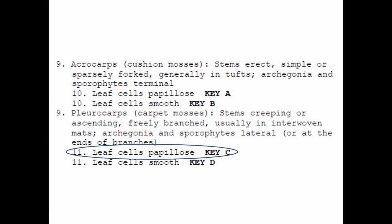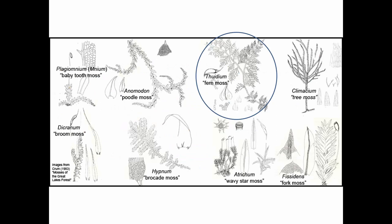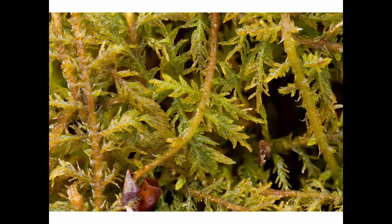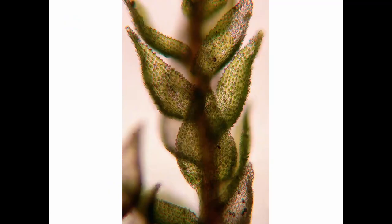Now let's look at some pleurocarps with papillose leaves. One is called Thuidium. Thuidium is a very fern-like moss, branched and branched again — twice pinnate — and very common. It grows on the ground, on stumps, and on logs, in fairly wet places and sometimes not so wet. Through the microscope it has leaves that are stoutly unipapillose.